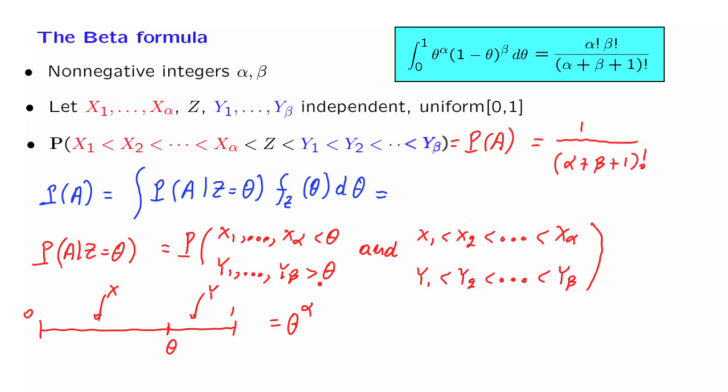Similarly, about the Y's. For any particular Y, the probability that it falls in this interval is equal to the length of this interval, which is 1 minus theta. This is the probability for each one of the Y's. There's beta many Y's. The Y's are independent. So the probability that all of them fall in this interval is going to be this number to the power of beta.